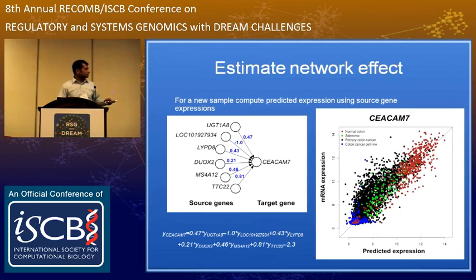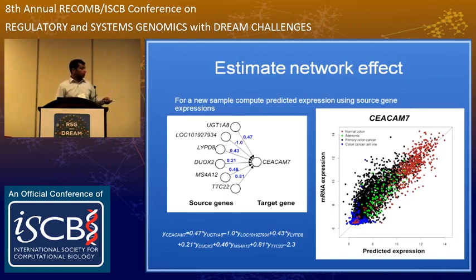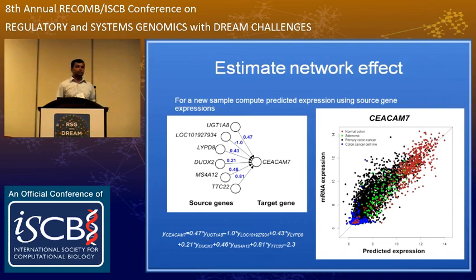Given the network, I can predict the expression of a given sample using its source genes. Here is an example for CCAM7 — the brown points are the normal samples and they follow the equality line very well, which is not surprising since the model is based on them. But the colon cancer samples also fit very well. Even though there is a fold change between normal and colon cancer samples, that fold change is completely or mostly predicted by the fold changes in its nearby genes. So this is one gene for which I hypothesize there is no hidden factor affecting the fold change — I can safely leave it out and concentrate on the ones that do not show this correlation.